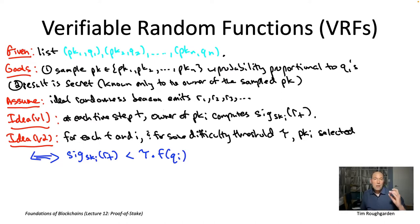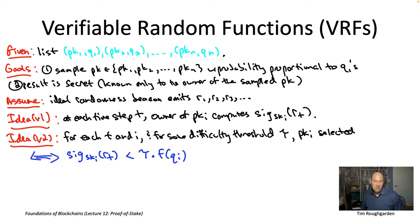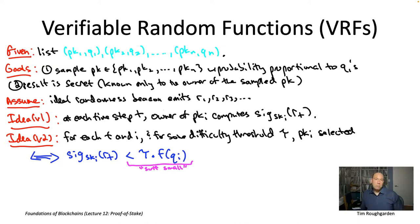We could do the same thing here: declare that public key PK_i gets selected if and only if its signature, viewed as a number, is sufficiently small — sufficiently close to zero. More formally, at a given time step t, a given owner of public key PK_i is selected if and only if the signature using the corresponding private key on the randomness R_t, viewed as a number between zero and one (interpret the bit string as an integer and divide by two to the 256), is less than the right-hand side of the blue inequality.